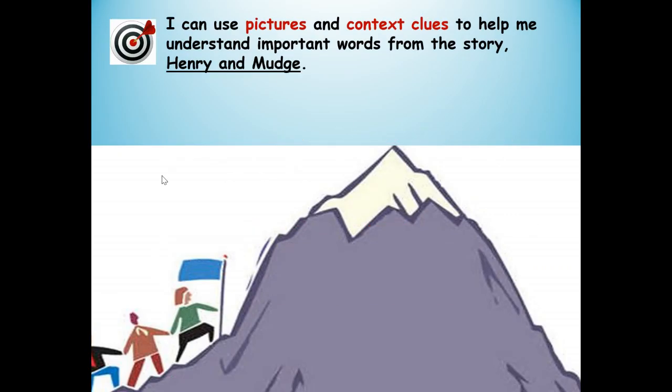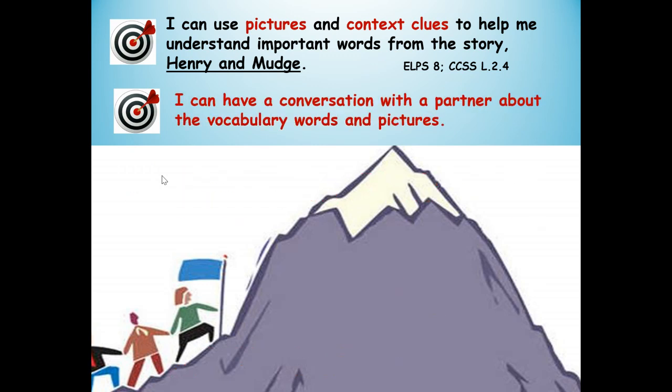Here's our learning target: I can use pictures and context clues to help me understand important words from the story, Henry and Mudge. Say it out loud with me. Here's our other learning target: I can have a conversation with a partner about the vocabulary words and pictures — saying I agree, I disagree, I notice, and how they're the same.